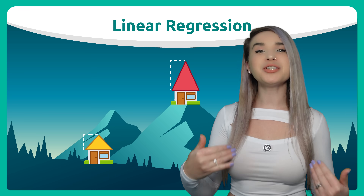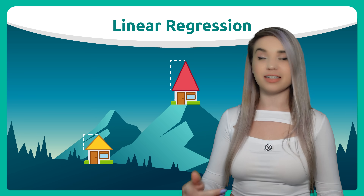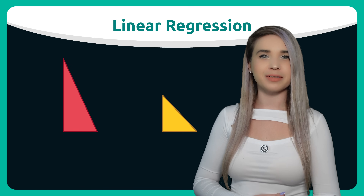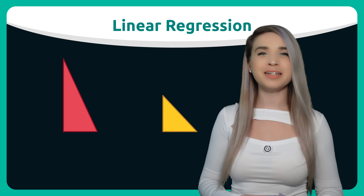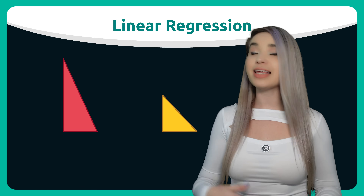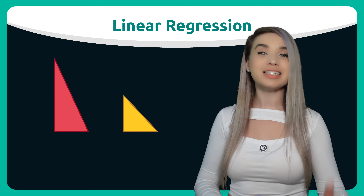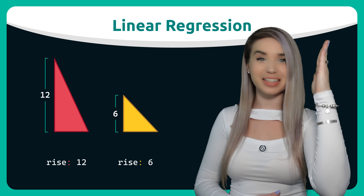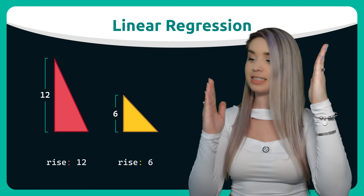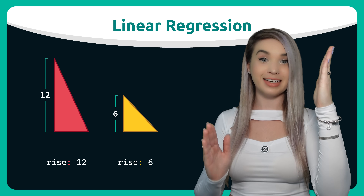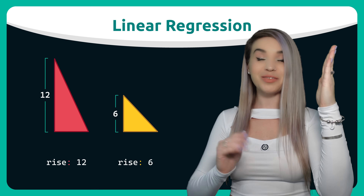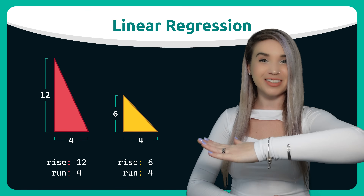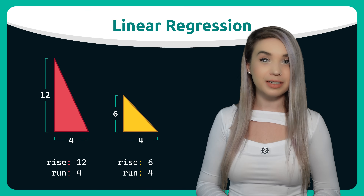So if we want to know the incline of both of these roofs, we will first chop them right in the middle and then we will calculate the rise, which is 12 units in the mountains and 6 units in the valley. Then we will calculate the run, which in both cases is 4.